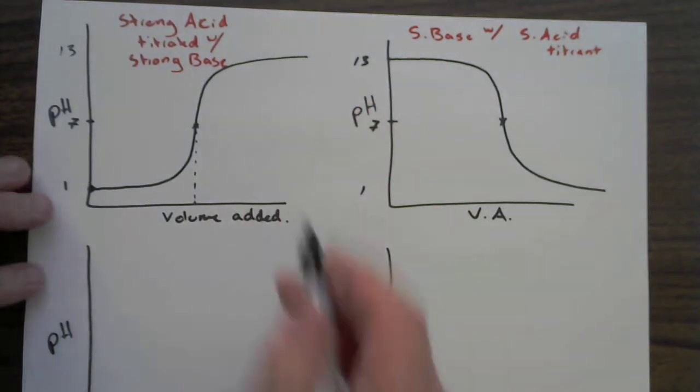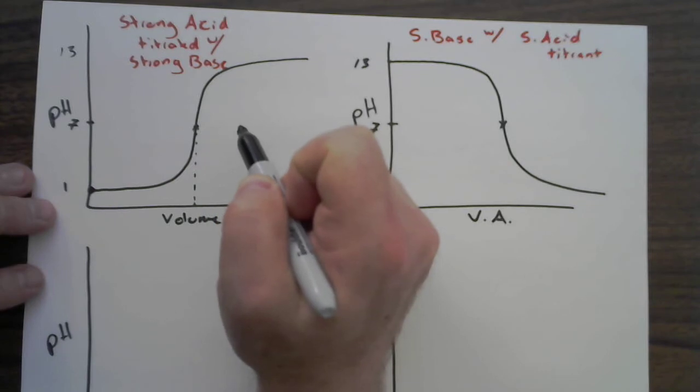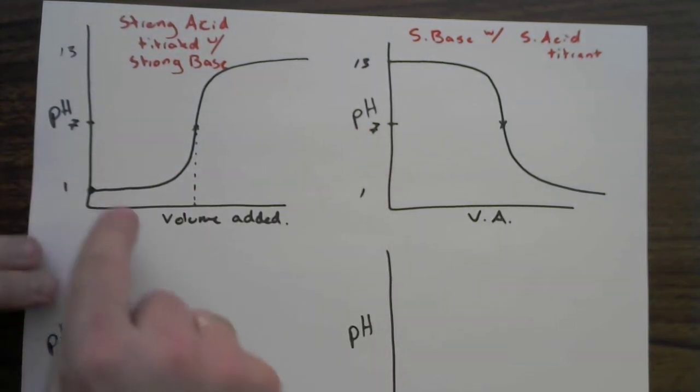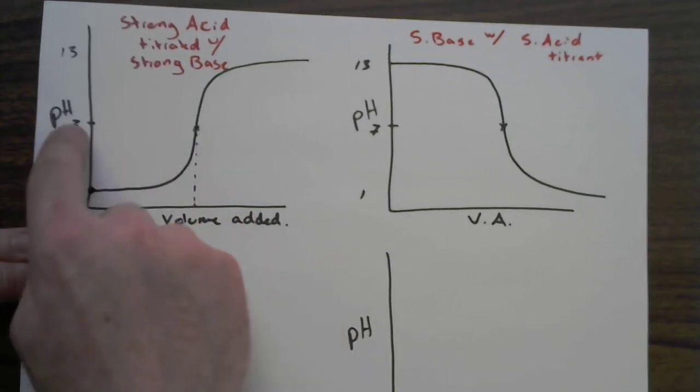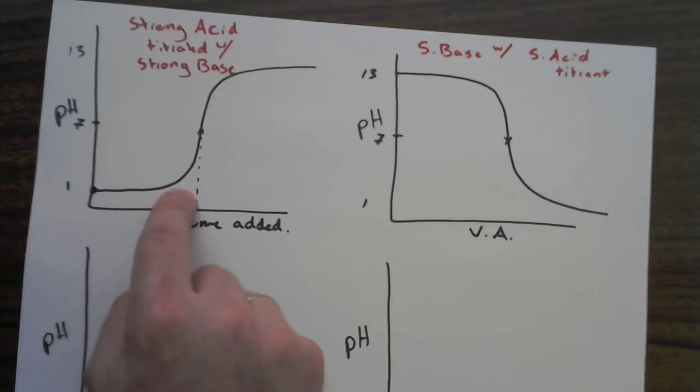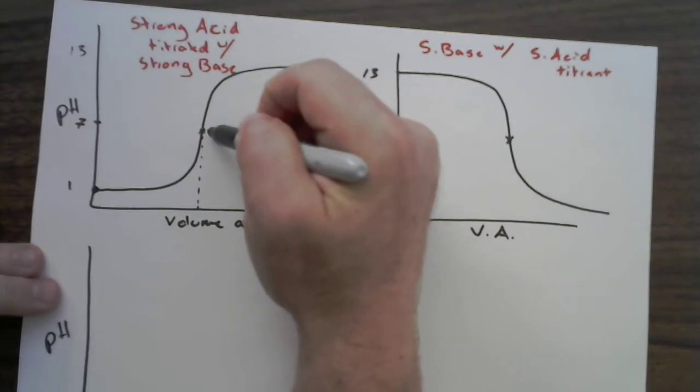Now in both cases, this location here, we call this the equivalence point. This is when all of the acid in this case that we started with has had enough volume added of the base so that we have neutralized everything, and so this is really a stoichiometry problem.